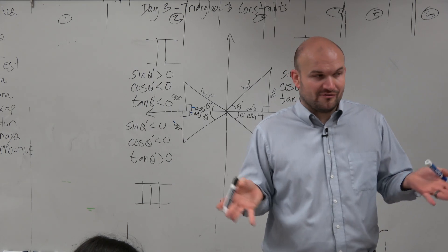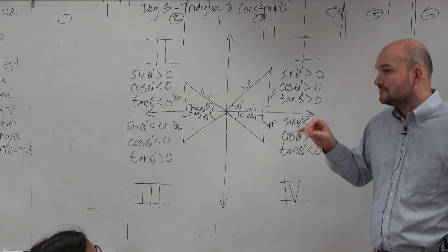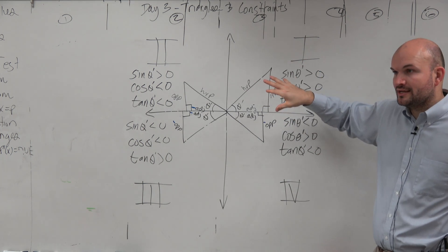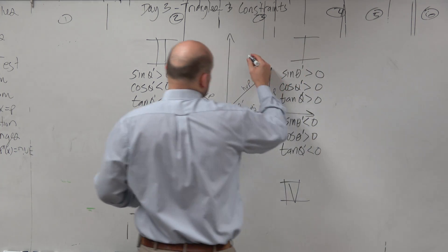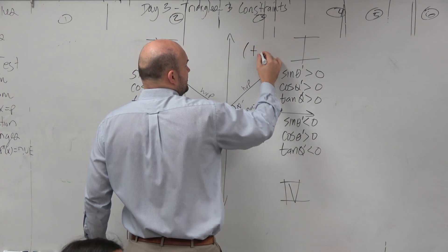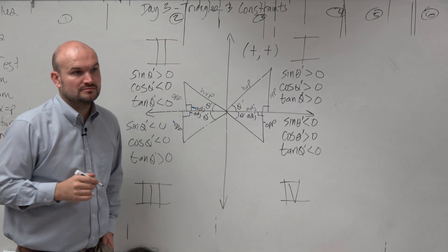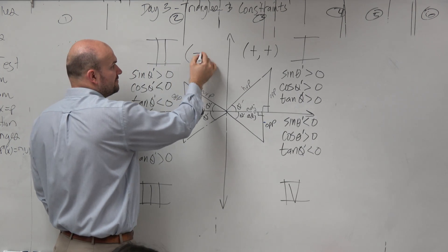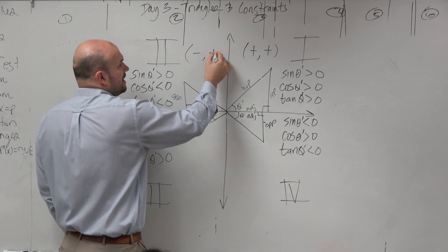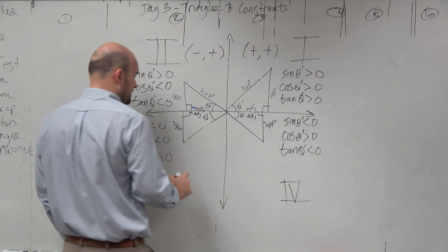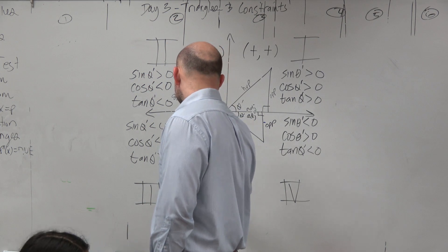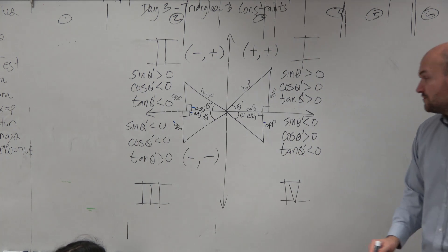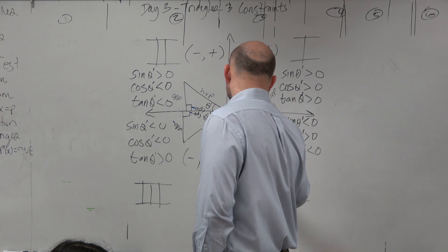The other point I want to mention — you guys all graphed points, right? So let's make a connection between trig and our coordinate grid system. In the first quadrant, you knew to graph there because both your x and y coordinates were positive. In the second quadrant, we graphed to the left because the x-coordinate was negative and the y-coordinate was positive. In the third quadrant, both x and y were negative. And in the fourth quadrant, x was positive and y was negative.